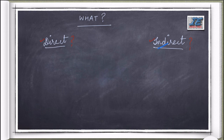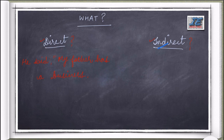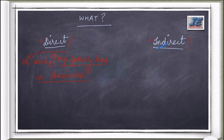We will understand this with an example. If I write 'He said, my father has a business,' here I have quoted the actual words of the speaker inside inverted commas. These are his exact words. This is called direct speech.